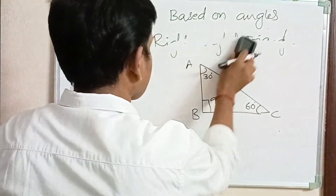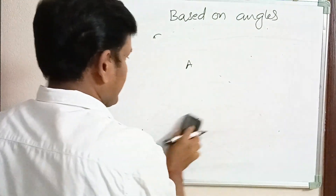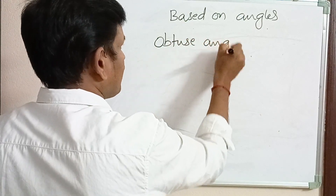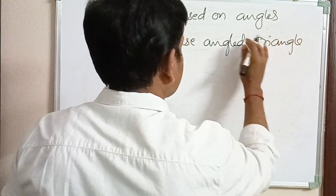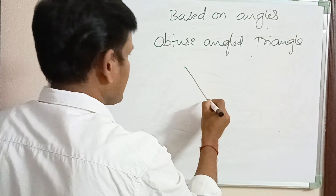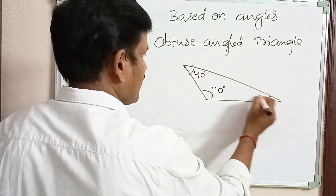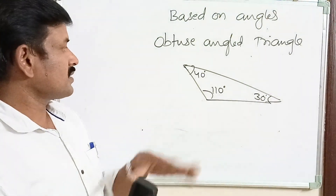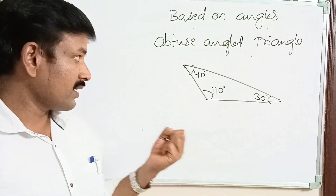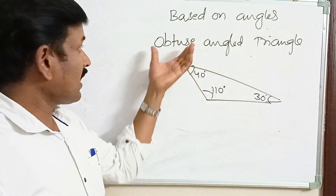The third type based on angles is the obtuse angled triangle. An obtuse angle is one that measures more than 90° and less than 180°. In a triangle where one angle is 110°, another is 40°, and the third is 30°, the angle of 110° is an obtuse angle. A triangle having one obtuse angle is called an obtuse angled triangle.